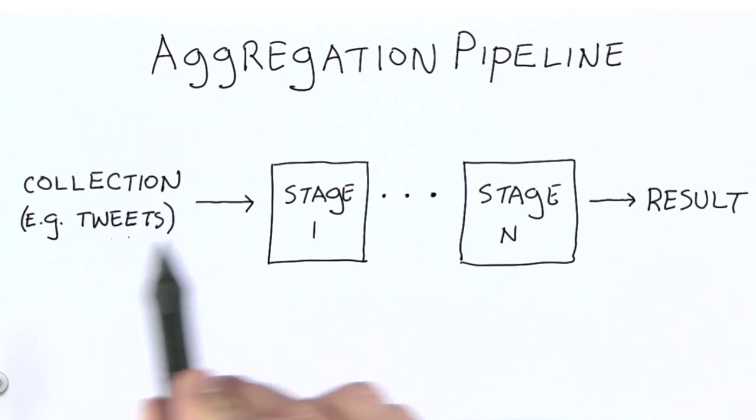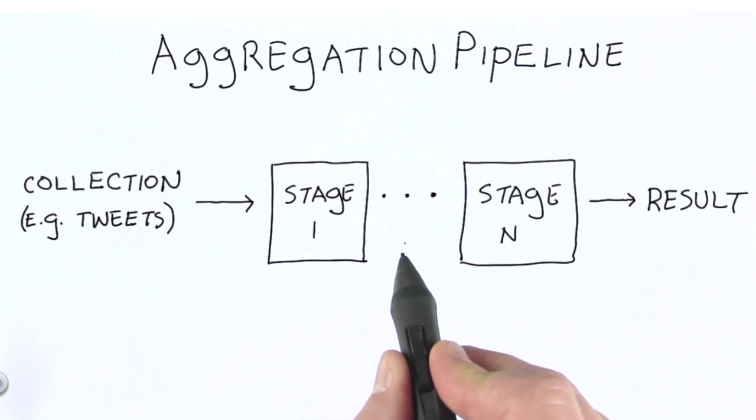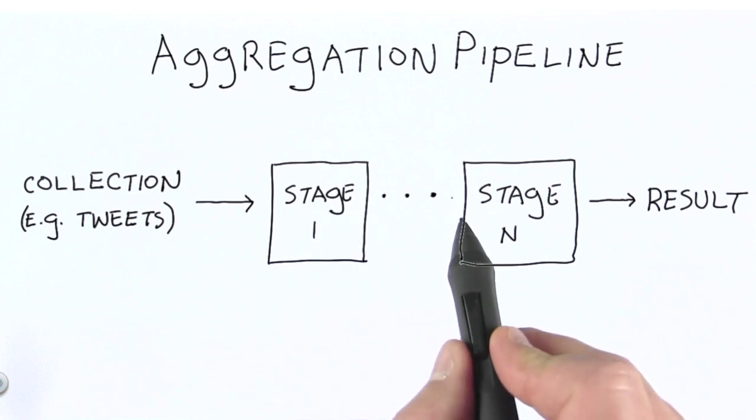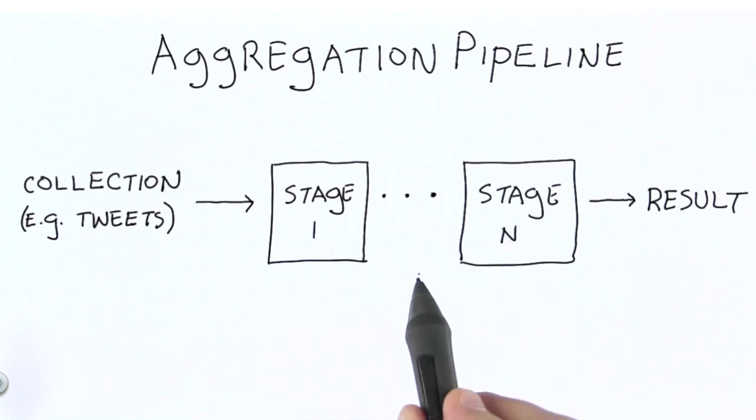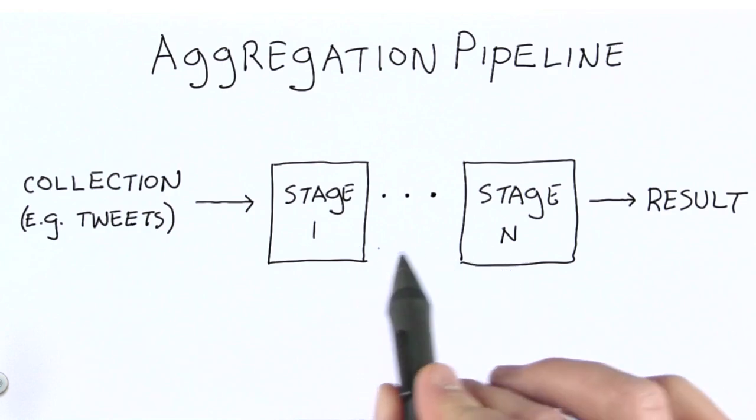The collection is fed into the first stage, which processes the documents in some way and passes the results on to the next stage. Each stage does this type of work: processes the documents it receives as input and produces output documents that are passed to the next stage.